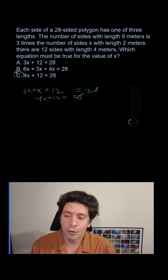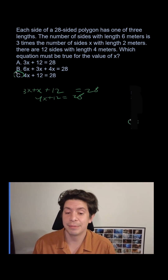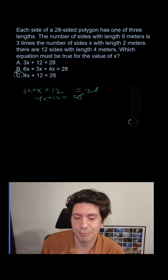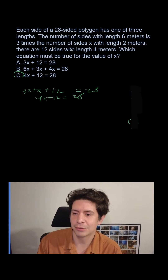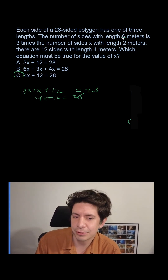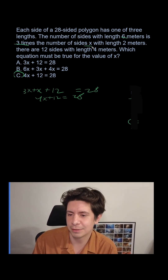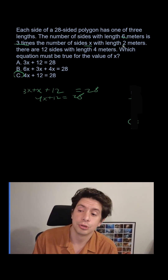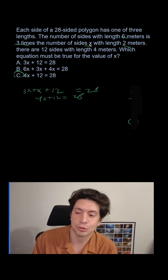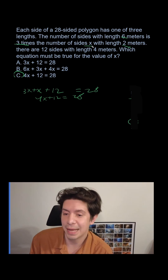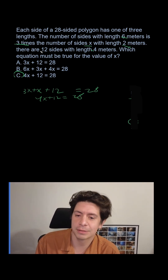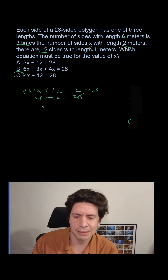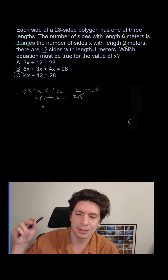This is considered a hard question and many people ask about it. The issue is getting the numbers confused — there are six-meter sides but three times the number of sides x with two-meter sides, so that's just x number of sides. And it's the 12 sides with length four meters — it's about the 12, not the four, that we care about.